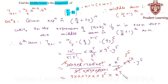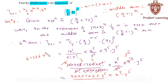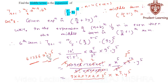Multiplying all these numbers gives 61236 · x^5 · y^5. Hence, the middle term in the given expansion is 61236 · x^5 · y^5. This completes our solution.